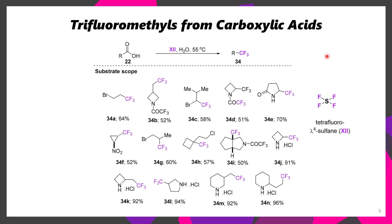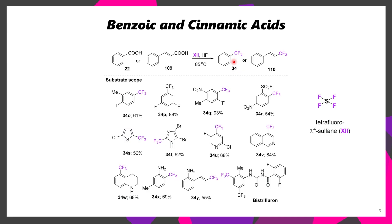One example of the use of SF4 is in the conversion of aliphatic carboxylic acids to the corresponding trifluoromethyl groups. In some cases, when you use DAST or SF4, you'll be afforded with the corresponding acyl fluoride, but under these conditions, the corresponding trifluoromethyl compound is prepared. In addition, benzoic and cinnamic acids are able to undergo deoxyflurination, affording trifluoromethyl arenes as well as viniligous trifluoromethyl groups.